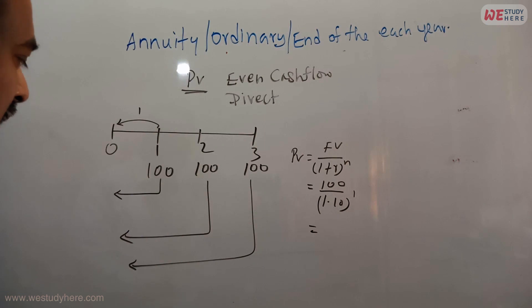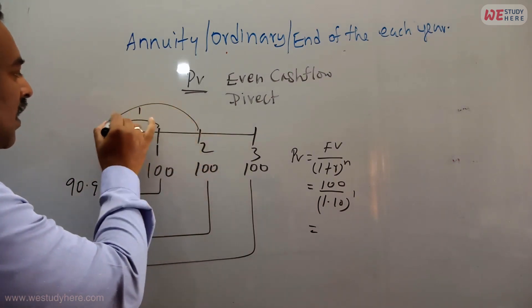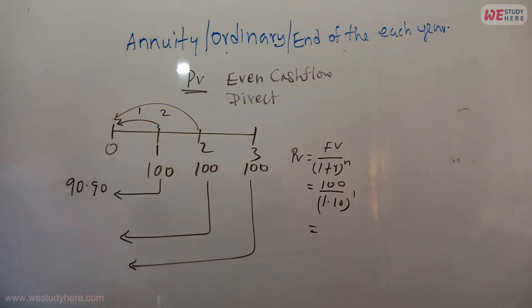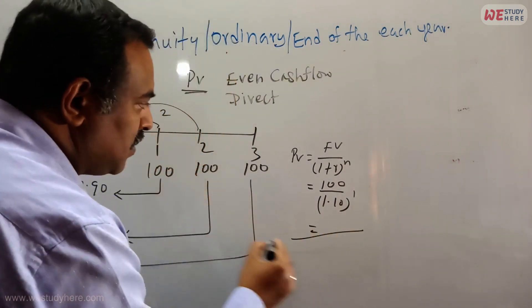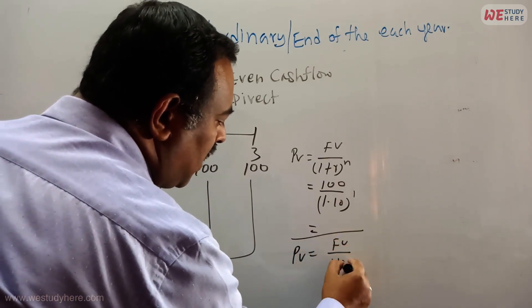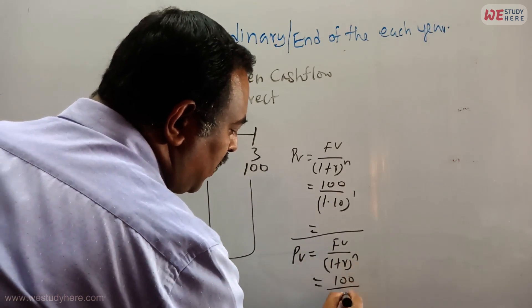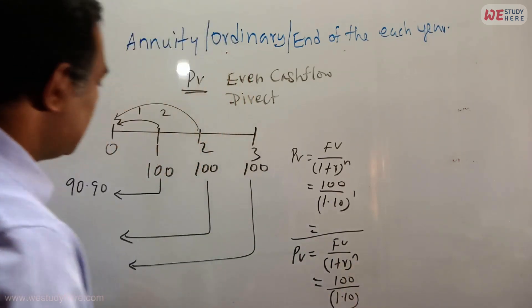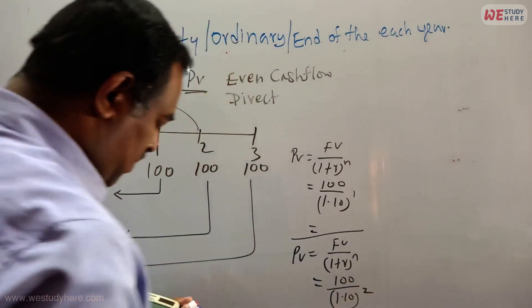It is 90.90, 90.90 for the second one. From here to here, how many years? Two years. Now again we will calculate this 100 future value. This formula: present value equals future value over 1 plus r raised to the power n. 100 over 1.10 raised to the power, how many years? Two years.